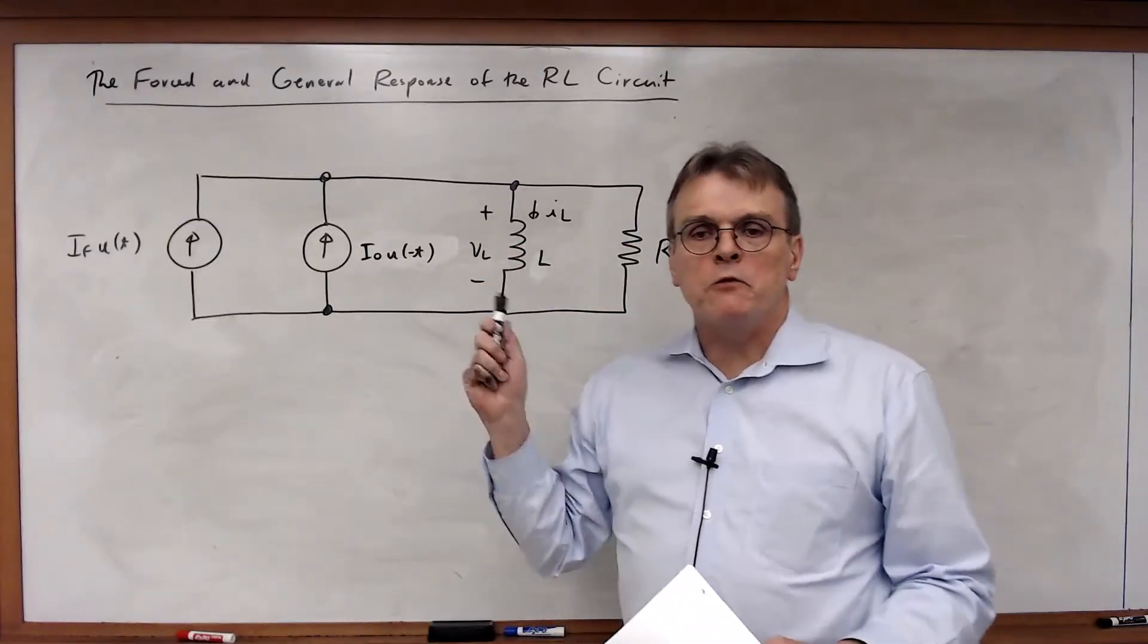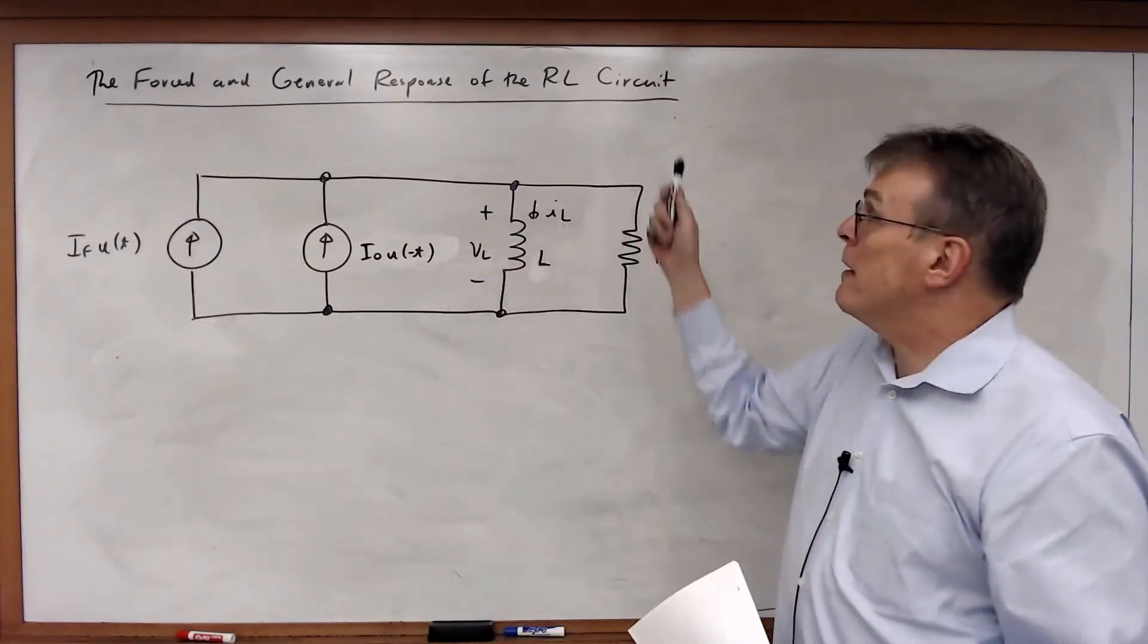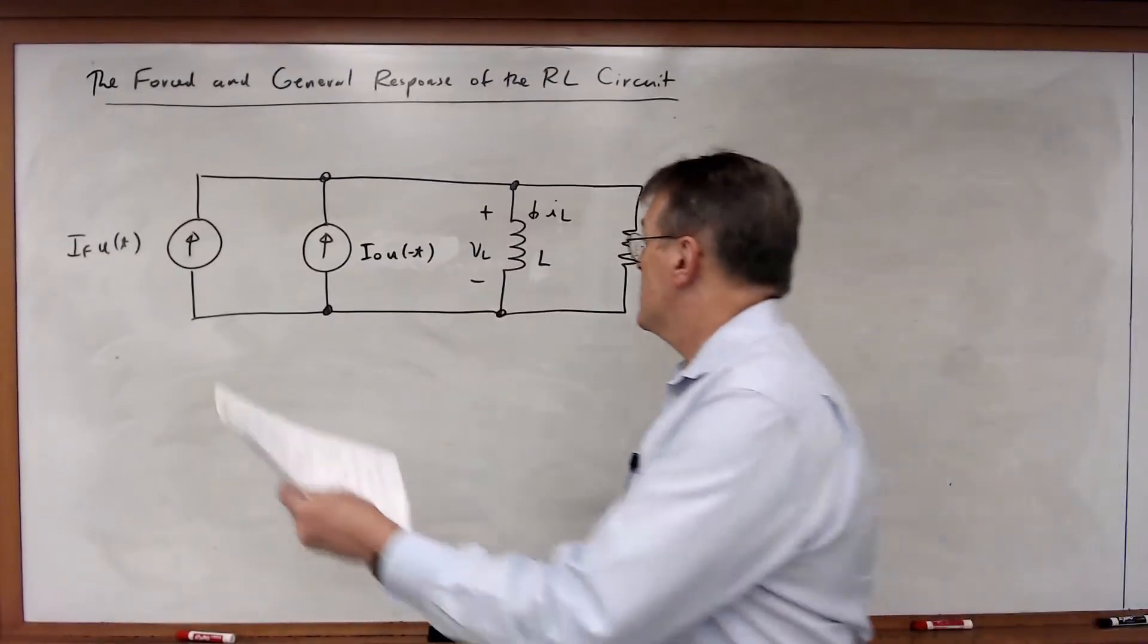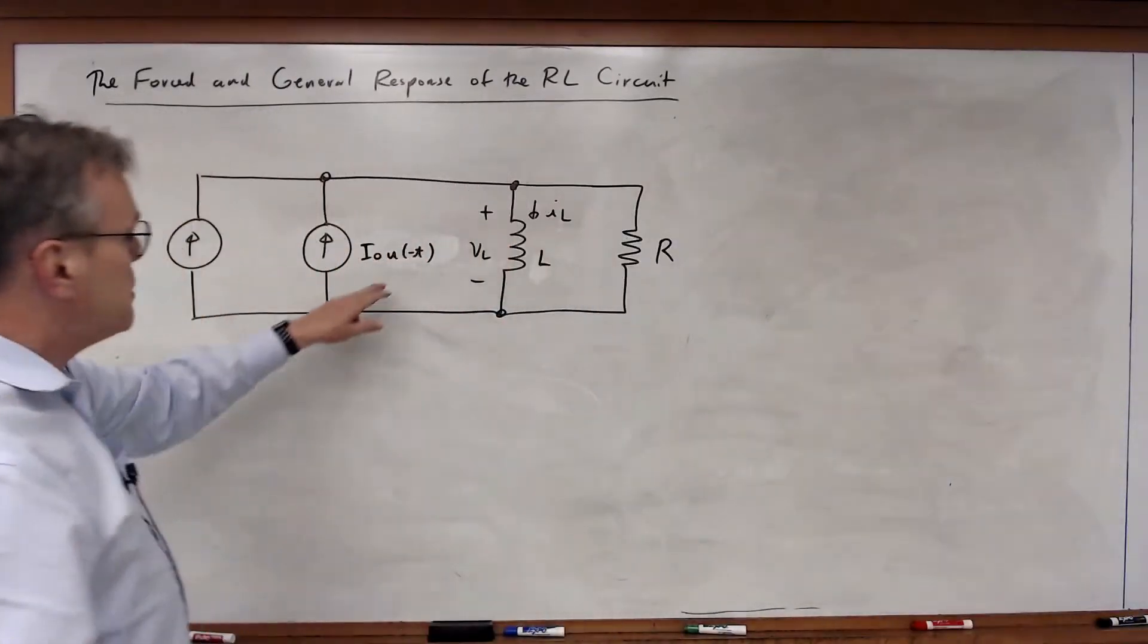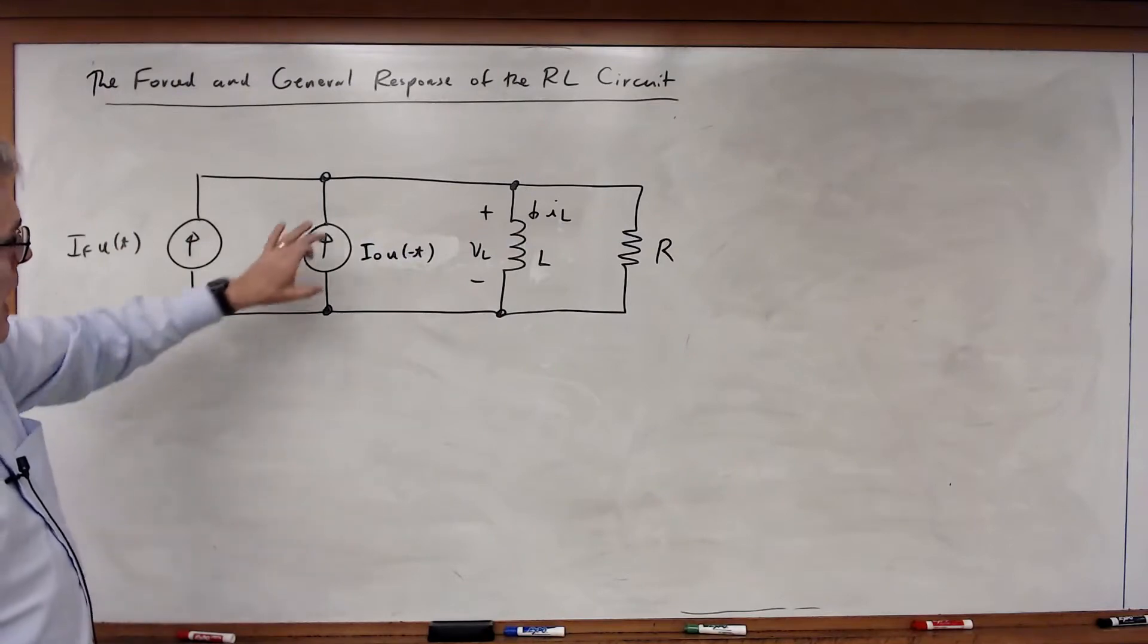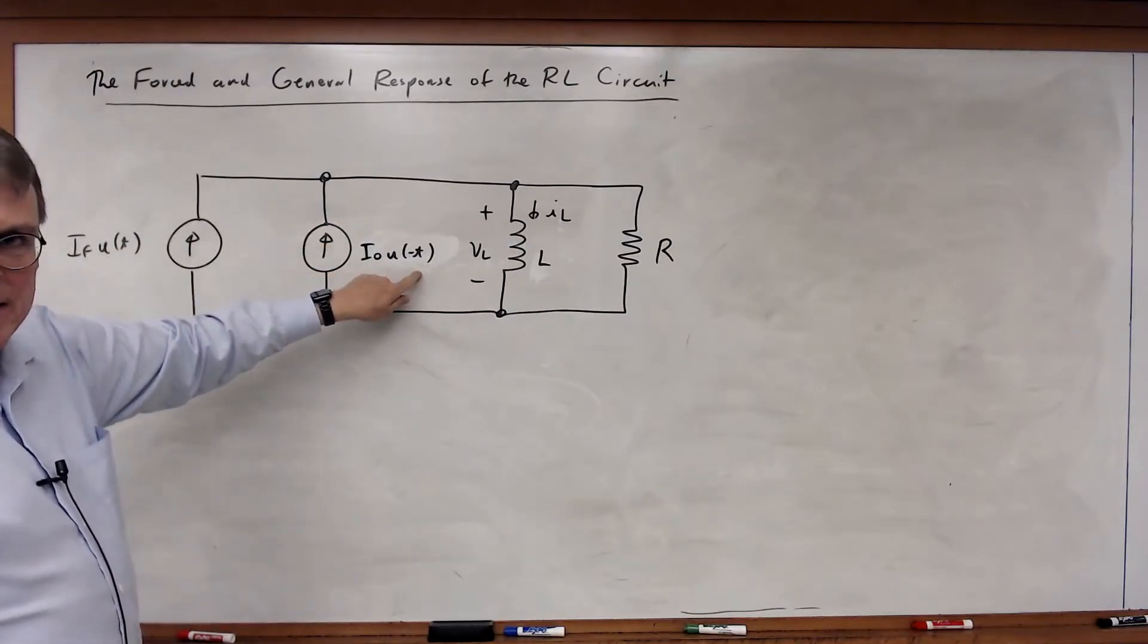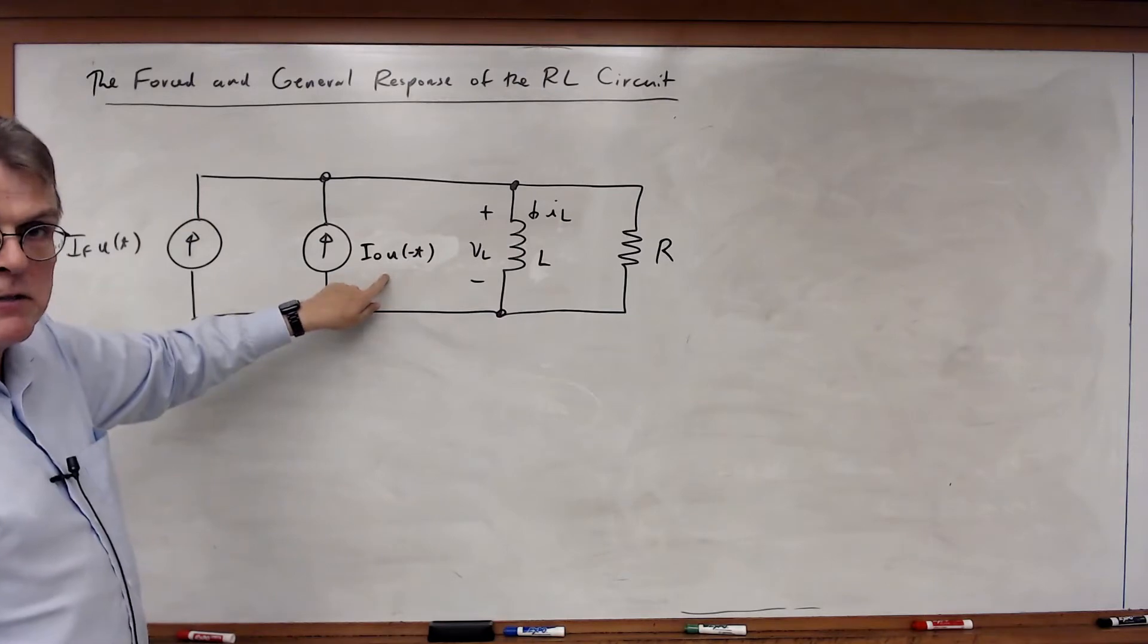Okay, let's now look at the forced and general response for the RL circuit. So here I've got a circuit where, once again, I'm using the unit step function. I've got I0 at u of minus t, so this will be on for t less than 0.